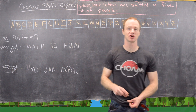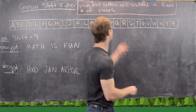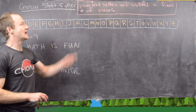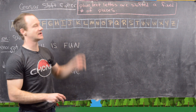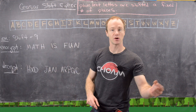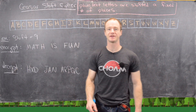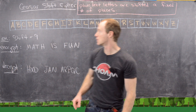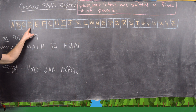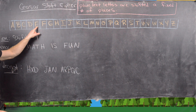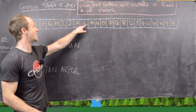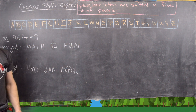The idea behind the Caesar shift cipher is you take each plain text letter and shift it a fixed number of places to the right. In this example, we're going to do a shift of 9, which means if we have the plain text letter D, that's going to be shifted 9 spaces to M.